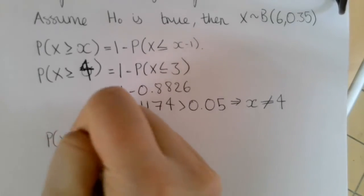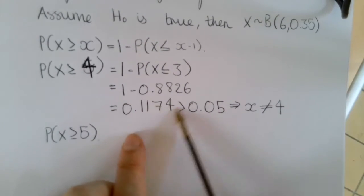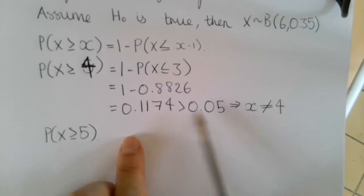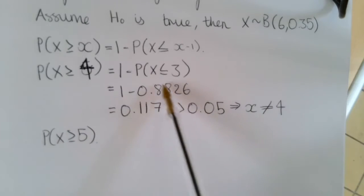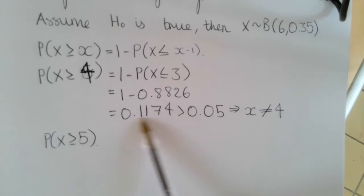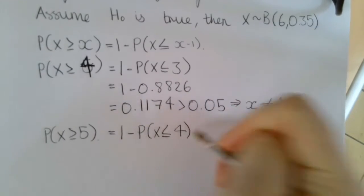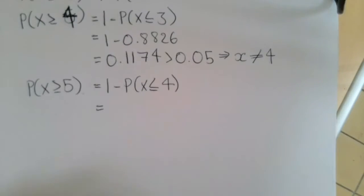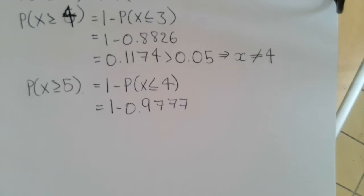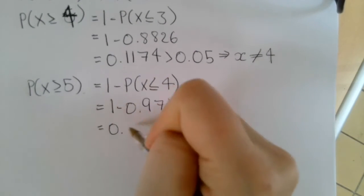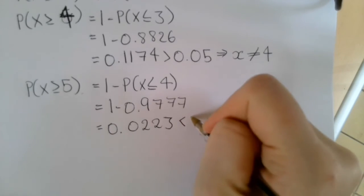Let's try x is greater than or equal to 5. The reason I've gone up to 5 and not down to 3 is because our value is a lot greater than 0.05. As the value of little x increases, we have a cumulative probability, so the value we subtract from 1 is greater, meaning the probability we end up with will be smaller. Here we're doing 1 minus the probability that x is less than or equal to 4, which is 1 minus 0.9777, and this equals 0.0223, which is less than 0.05.